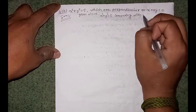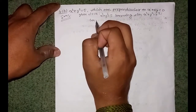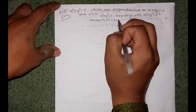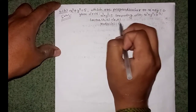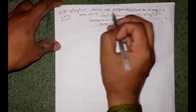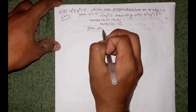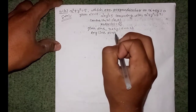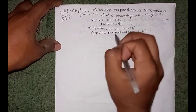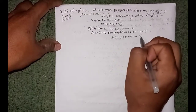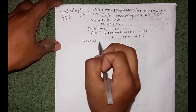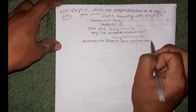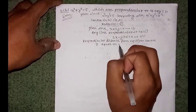Comparing the new circle with x² + y² = r², the center is (0, 0) and radius r = √5. The given line is x + 2y = 0, equation 1. Any line perpendicular to equation 1 has the form 2x - y + k = 0, which is equation 2. The perpendicular distance from equation 2 to the center equals the radius.